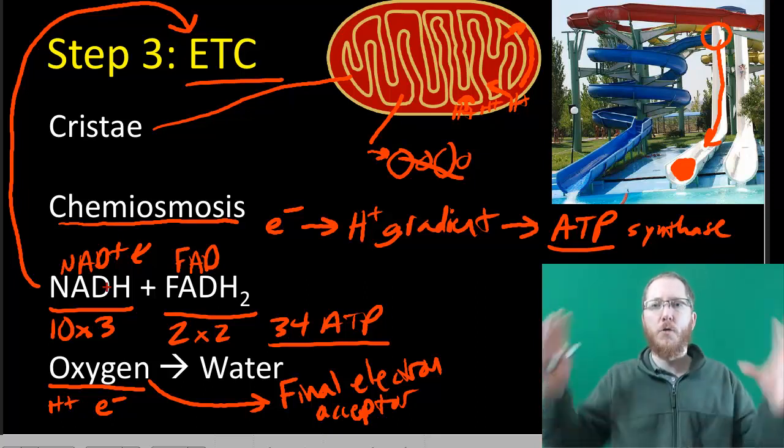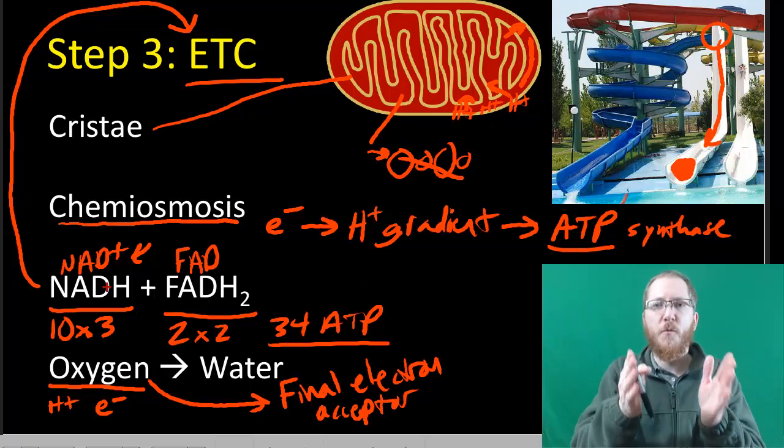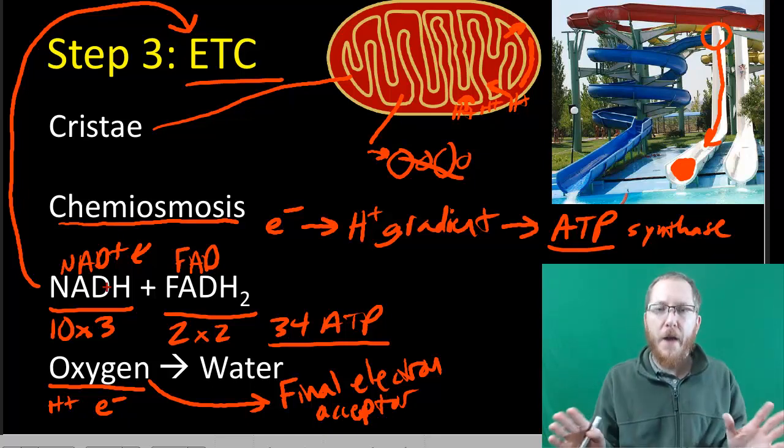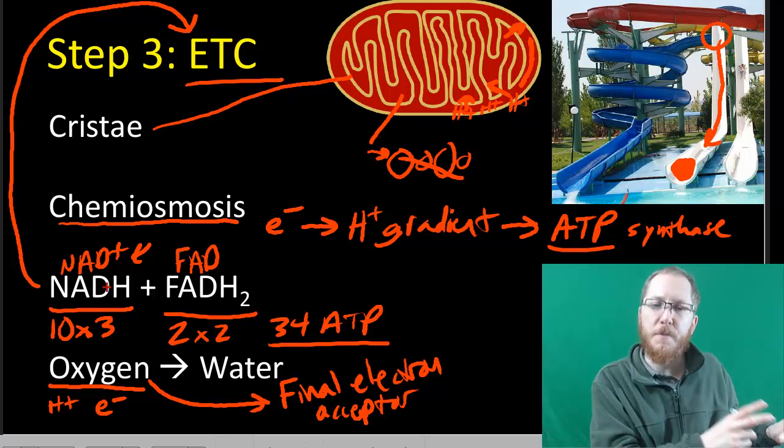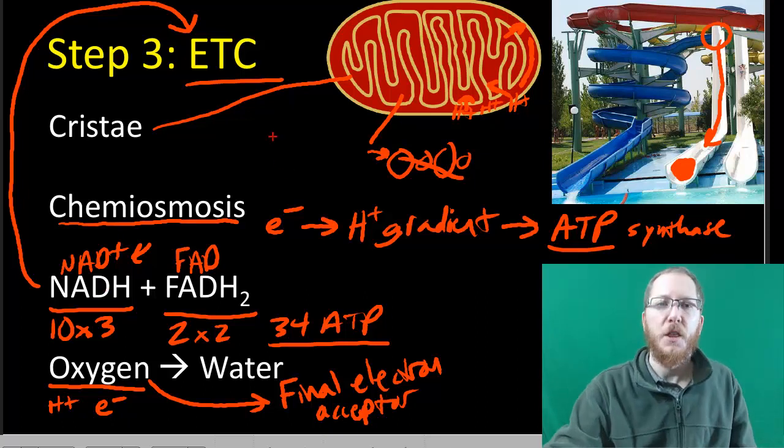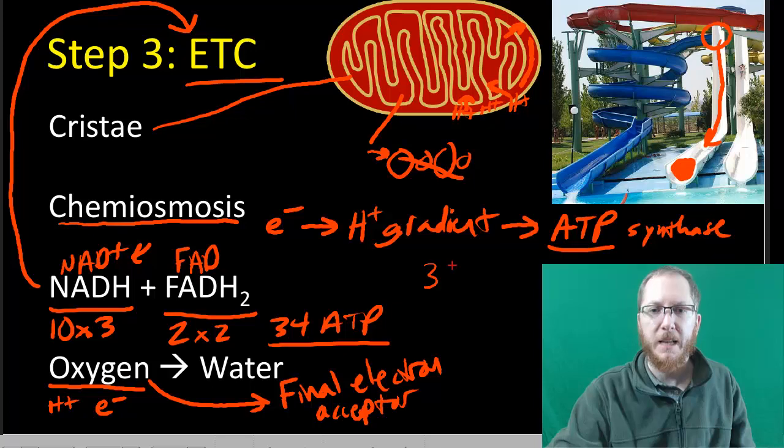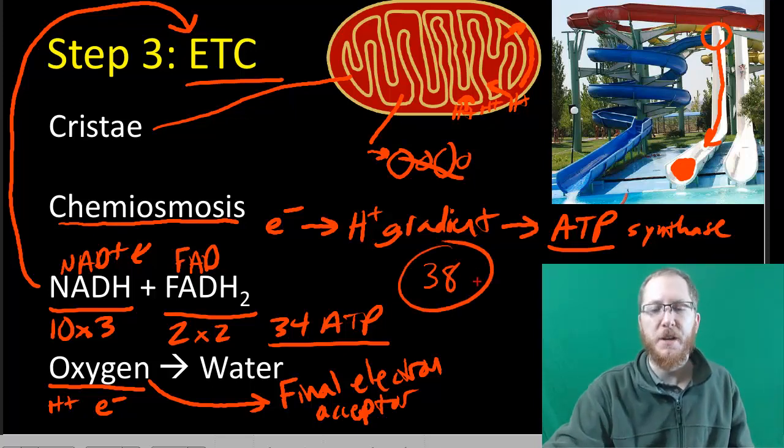That wraps up aerobic respiration. We have CO2 now is what our sugars become. We have water is what oxygen has become with the electrons. All of our energy molecules besides ATP have been reverted back to their original form so they can be reused. What we're left with is a bunch of ATP. The total amount of ATP that we've made will be 38. That's our magic number of aerobic.